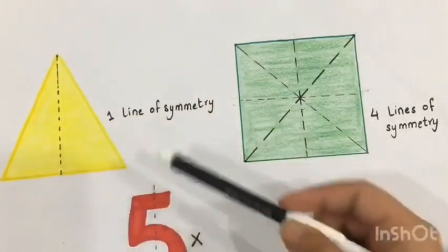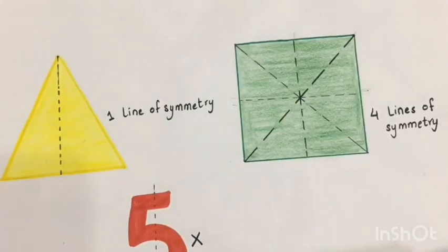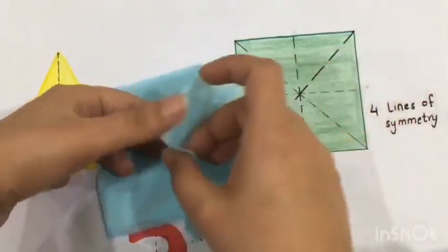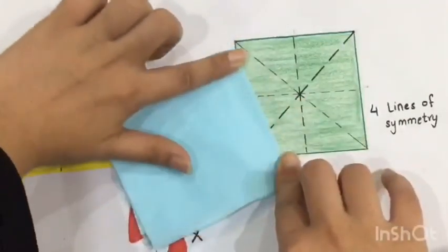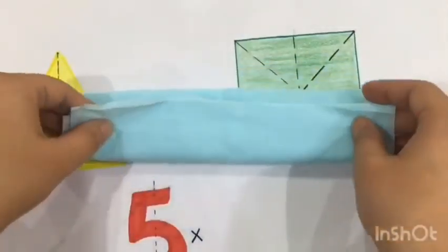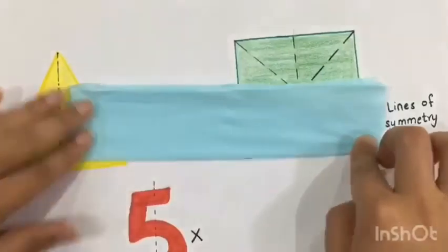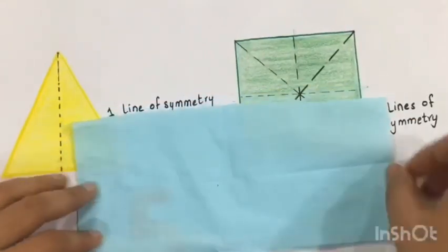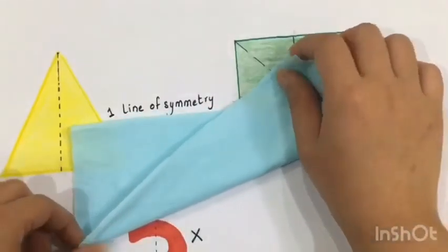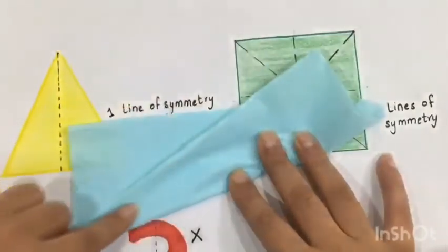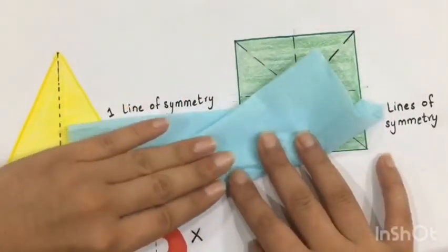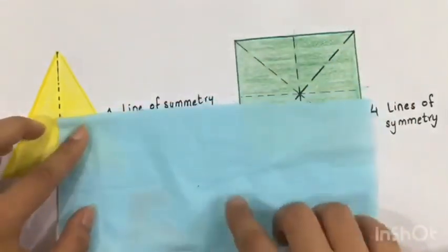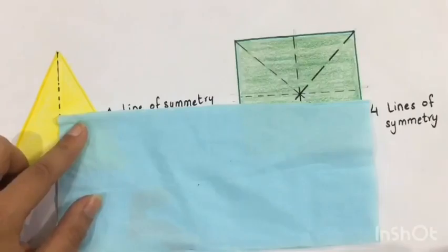Now take a look at this rectangle. We are going to find the lines of symmetry for rectangle. If I fold it like this, this is one line of symmetry because this part is matching the other part. And if I do it like this, this line is also a line of symmetry for rectangle. But if I want to cut it diagonally, no — this is not the line of symmetry because this part is not properly covering this part of the rectangle. So a rectangle has just two lines of symmetry.